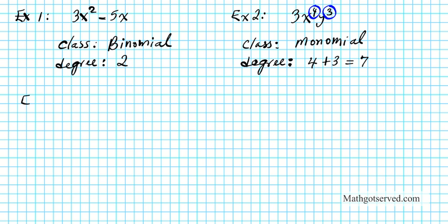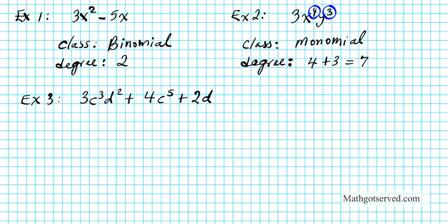Example 3: what if we have the expression 3c to the 3rd times d to the 2nd, plus 4c to the 5th, plus 2d? What is the classification of this polynomial? We have 1, 2, 3 — three terms. So this is a trinomial.